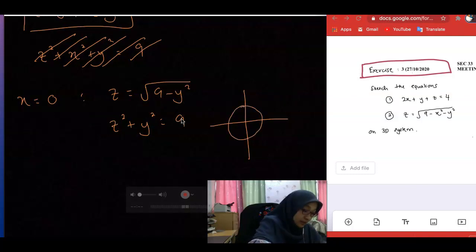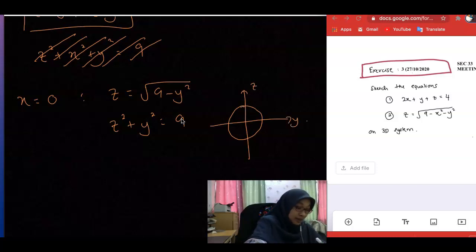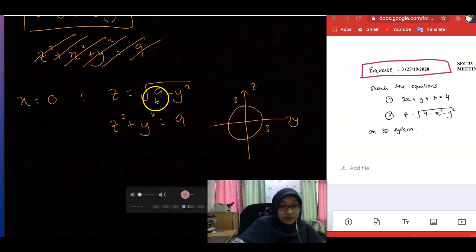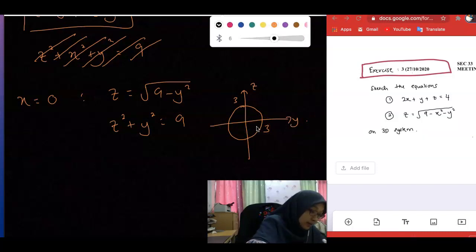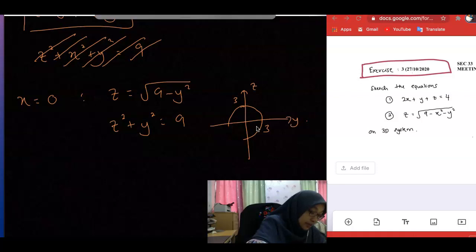But we've got 3 here, but your z is always positive. Because the original expression is in this form, z is only positive. So you have to erase the bottom part. We just consider the upper one, the top one.